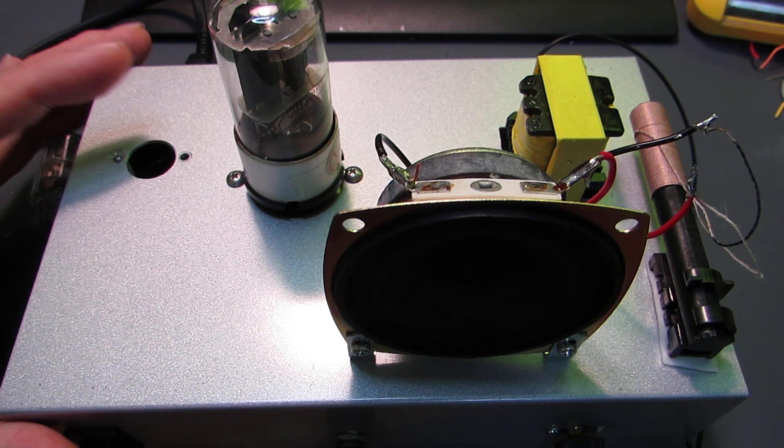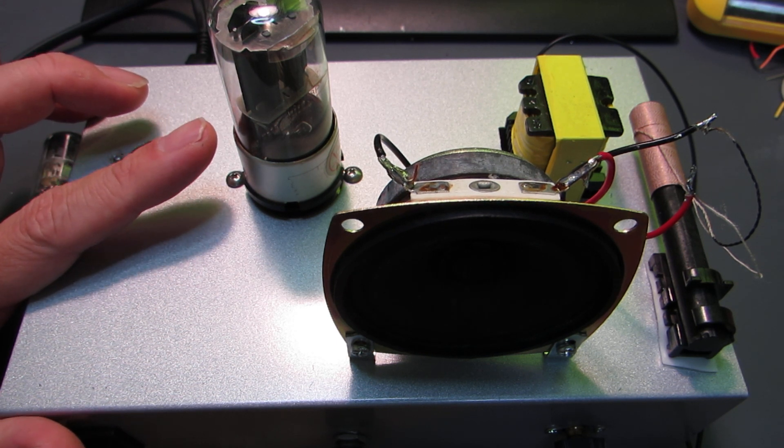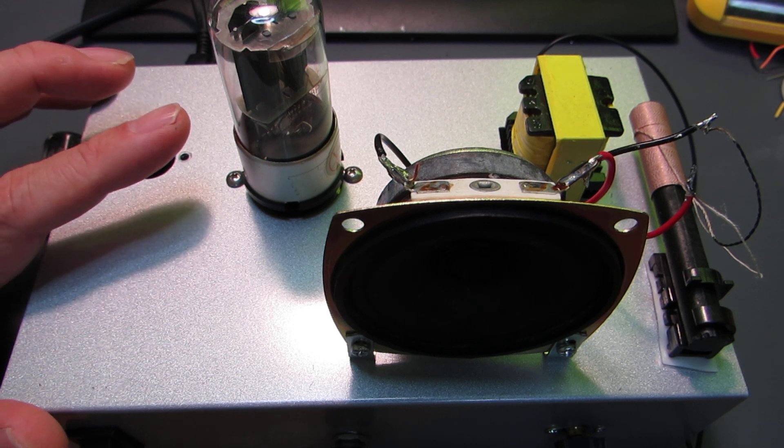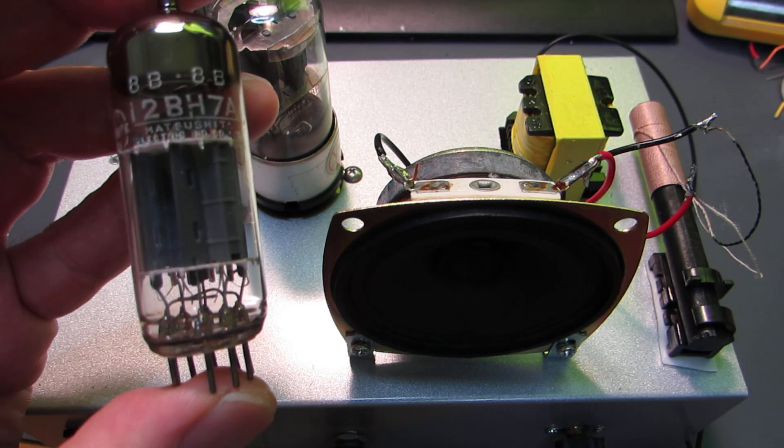And this time I made the radio by using the single tube 6SN7. It's the same as the previous amplifier. And indeed, I have tried by using several tubes.